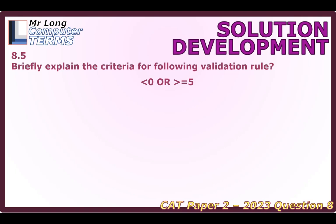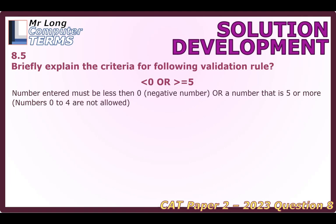Now question 8.5. We've got a criteria for a validation rule in Access. The criteria is less than 0 OR greater than or equal to 5. So we want numbers that are negative — smaller than 0 — or numbers that are 5 or more. We do not want the numbers 0 through 4. The numbers 0, 1, 2, 3, and 4 are not allowed, but 5 onward is allowed.